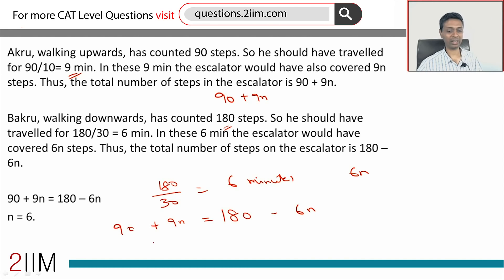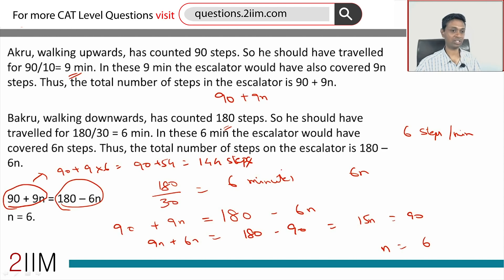With this we can find N. 9N + 6N = 180 - 90, or 15N = 90, or N = 6. The escalator does 6 steps per minute. It's important. Now how many steps are there totally? That is either equal to 90 + 9N or 180 - 6N. We take this: it is 90 + 9 × 6, which is 90 + 54, which is 144 steps. There are totally 144 steps in this escalator. Now let's forget about all this and come and focus on Chakru, who does 20 steps a minute.